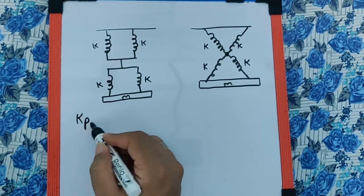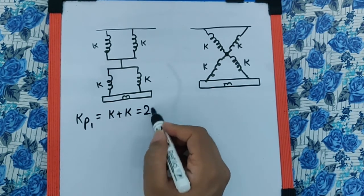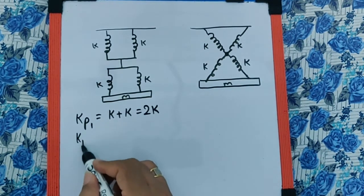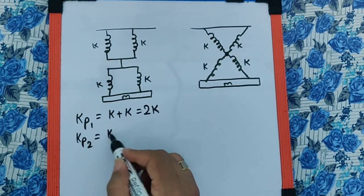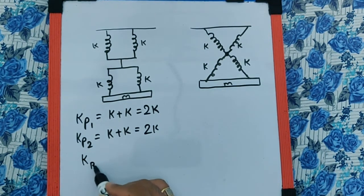So I can say the parallel combination one is going to be K plus K, which is 2K. And the parallel combination two is also going to be K plus K, which is 2K. And for K resultant,